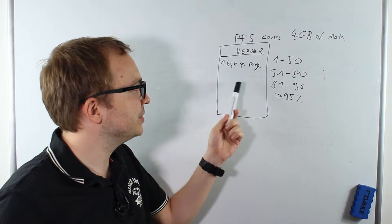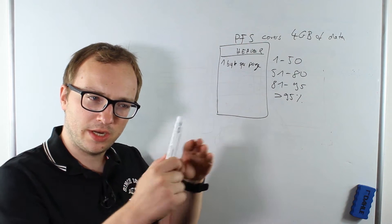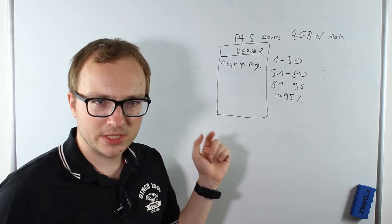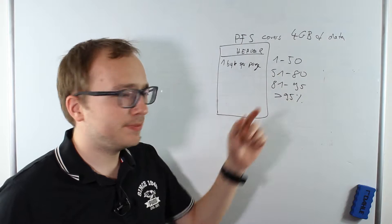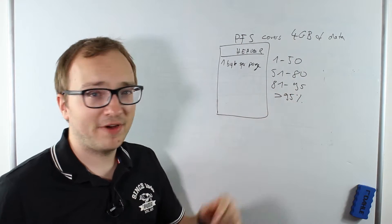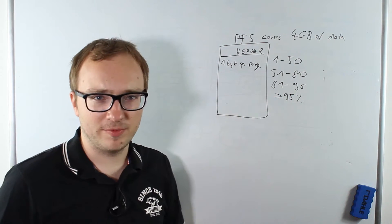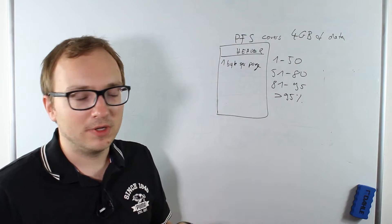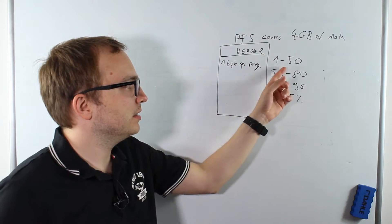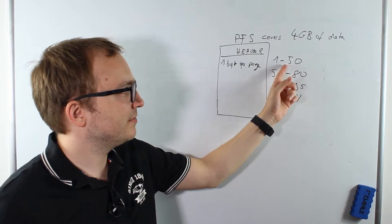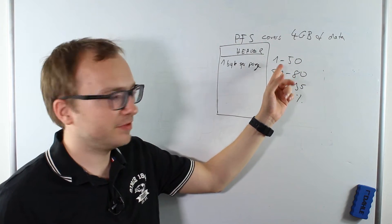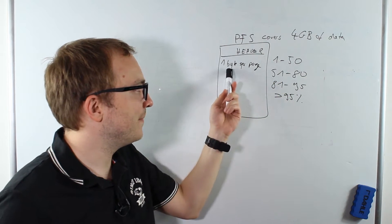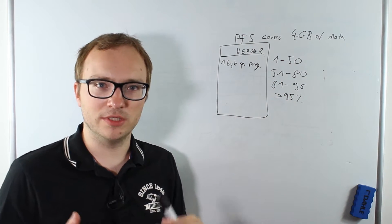In the PFS page you can see entries for each page showing how filled up it is. We can distinguish between 1–50% filled, 51–80% filled, 81–95% filled, and over 95% filled — up until full. These are only estimations; we can only say if it's in a category, somewhere between those ranges, due to the single byte we have to encode the state of the page.